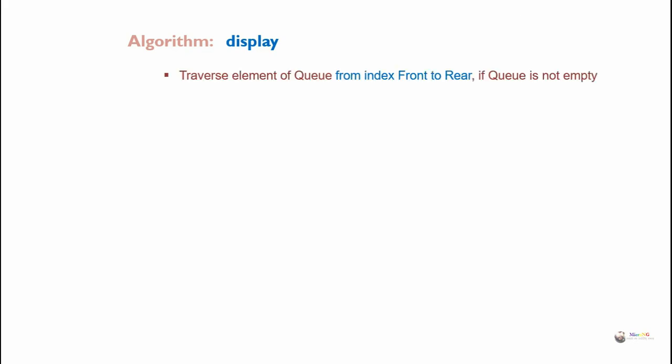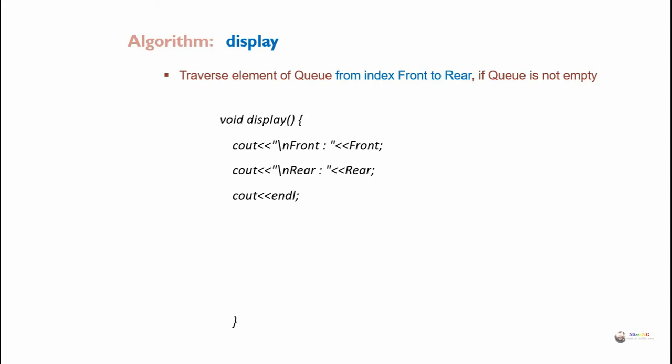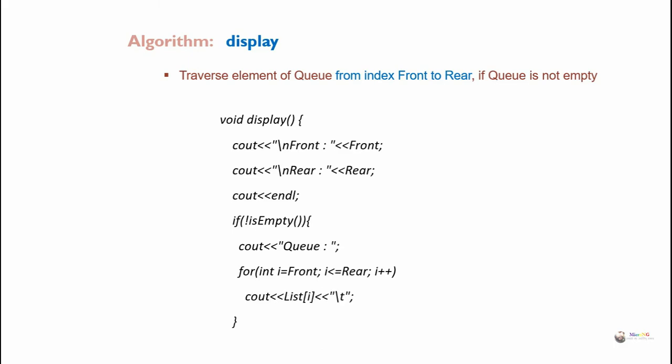For the display operation, it traverses elements of the queue from index front to rear, if the queue is not empty. In the display algorithm, first display the values of front and rear. Then check whether the queue is empty or not. If it is not empty, display all elements present in the queue starting from front to rear.